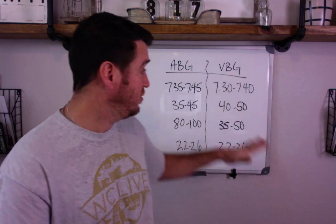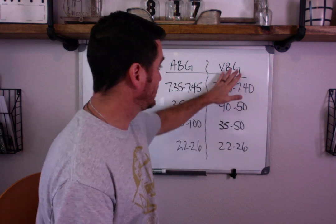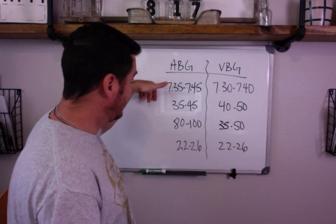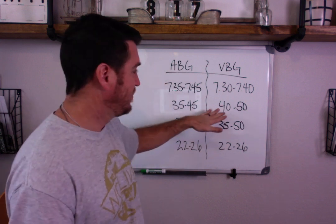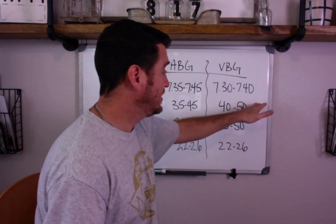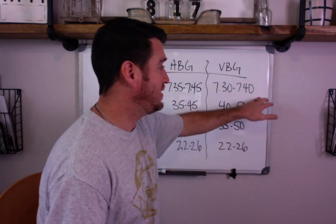If CO2 in arterial blood goes up, pH goes down. It's the same thing in venous blood. If the venous blood has more CO2, then pH is lower.